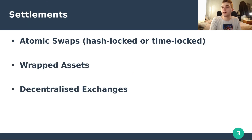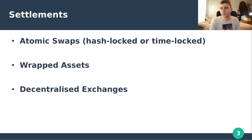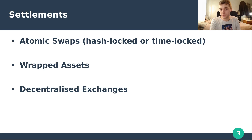Another aspect to think about is settlements themselves. The main way for cross-chain exchanges to take place is through atomic swaps, regardless of whether they're hash-locked or time-locked. Another way of doing it is through wrapped assets — so you have wrapped Bitcoin on ETH and you're trading Bitcoin for ETH. But this is a backwards approach and it's not really authentic. It's like trading fool's gold for gold itself — it looks the same but it isn't the real deal.